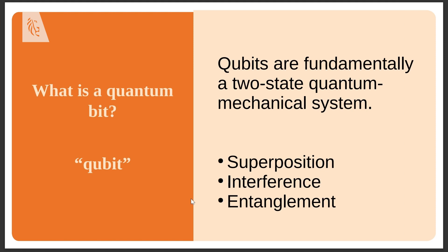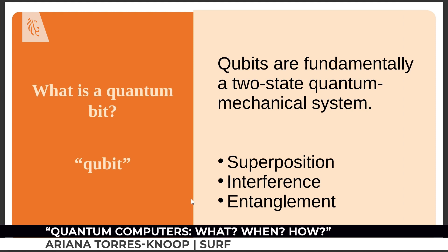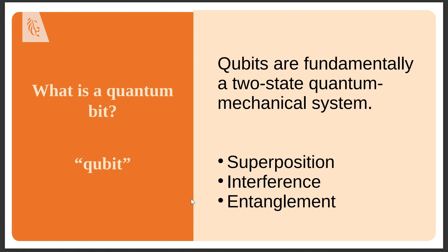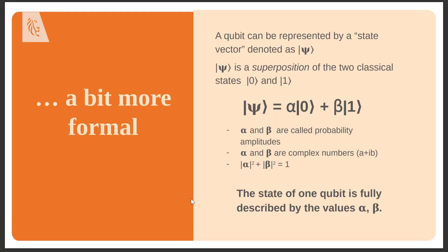Let me say two words about interference and entanglement. Interference refers to the ability to either reinforce or destroy the state of a system. Entanglement refers to the ability of different qubits to act as a group — they become entangled, so an action on one qubit affects several qubits at the same time.